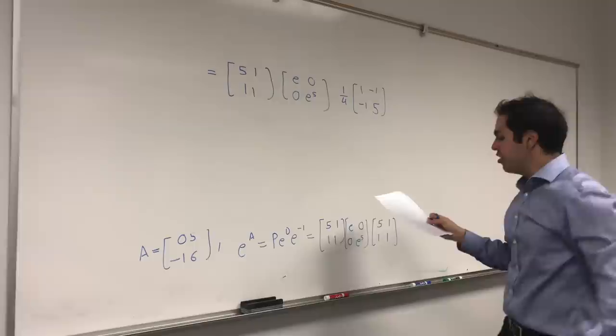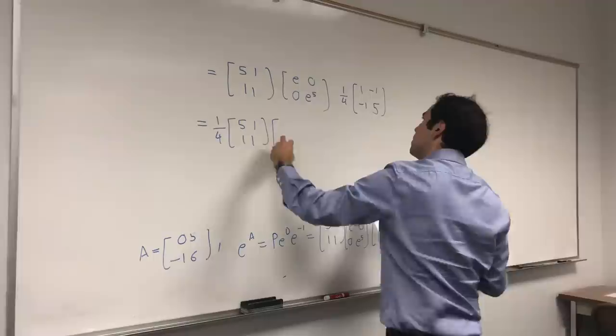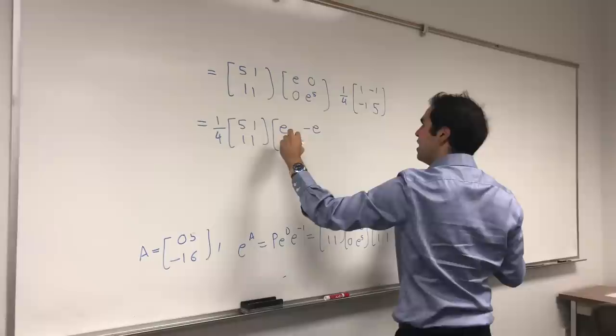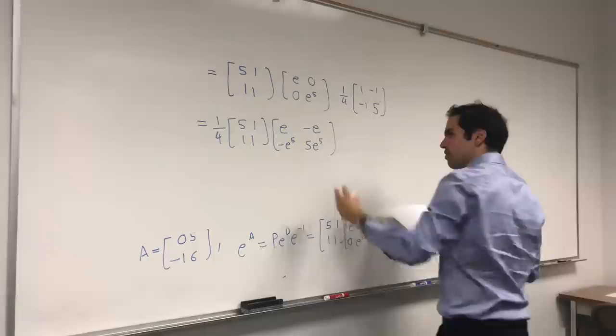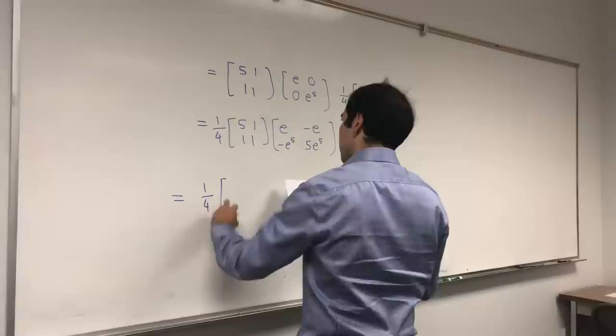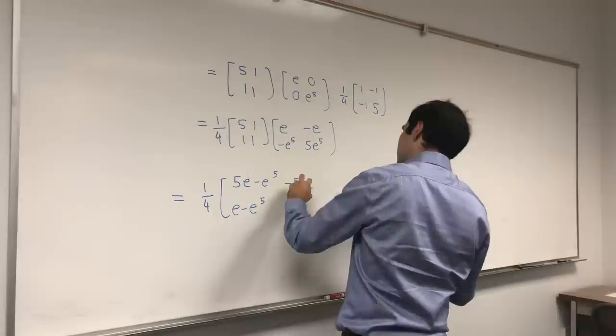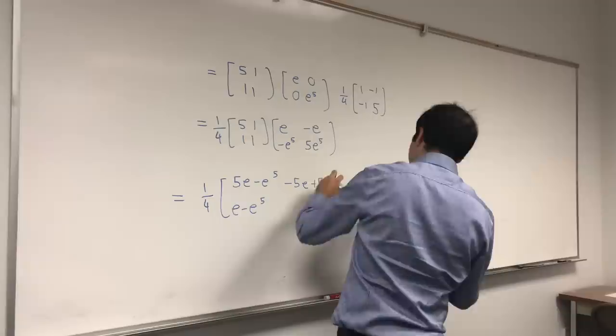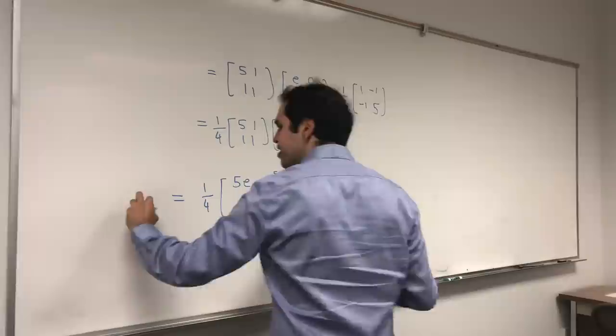And then, you calculate this. So, 1 4th, 5, 1, 1, 1. And then, E times minus 1. So, just E. And then, minus E. Minus E to the 5th. And 5 E to the 5th. And then, you calculate that as well now. So, you get 1 4th. And then, 5 E minus E to the 5th. E minus E to the 5th. Minus 5 E plus 5 E to the 5th. And minus E plus 5 E to the 5th. And there you go. So, this is the exponential of A. How nice is that?